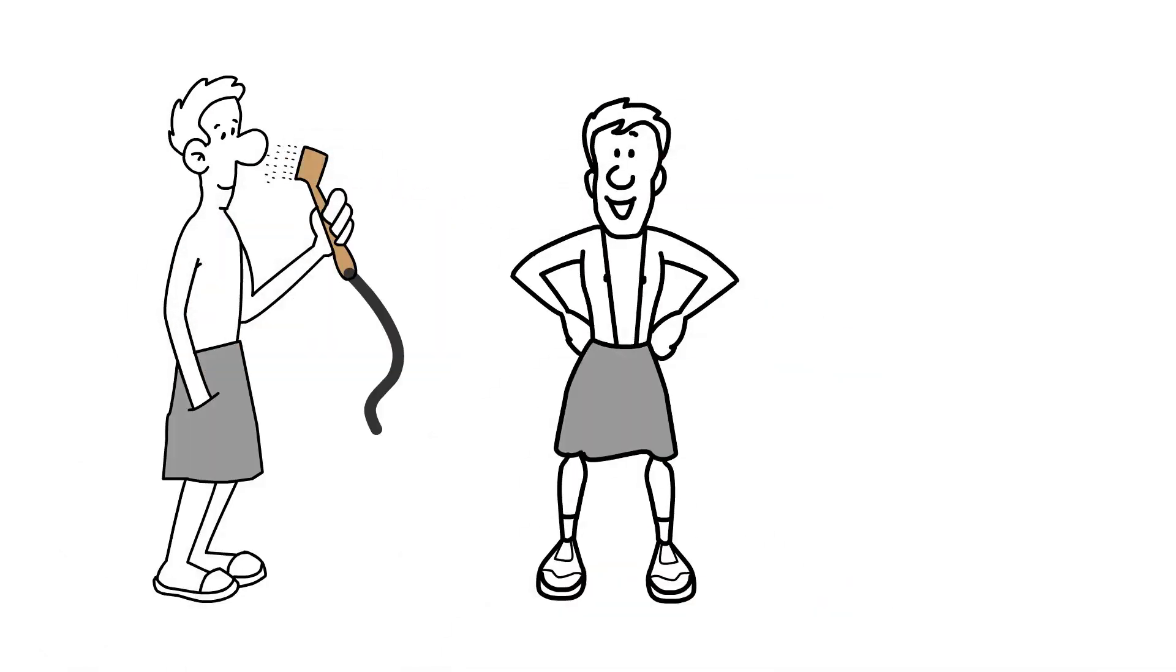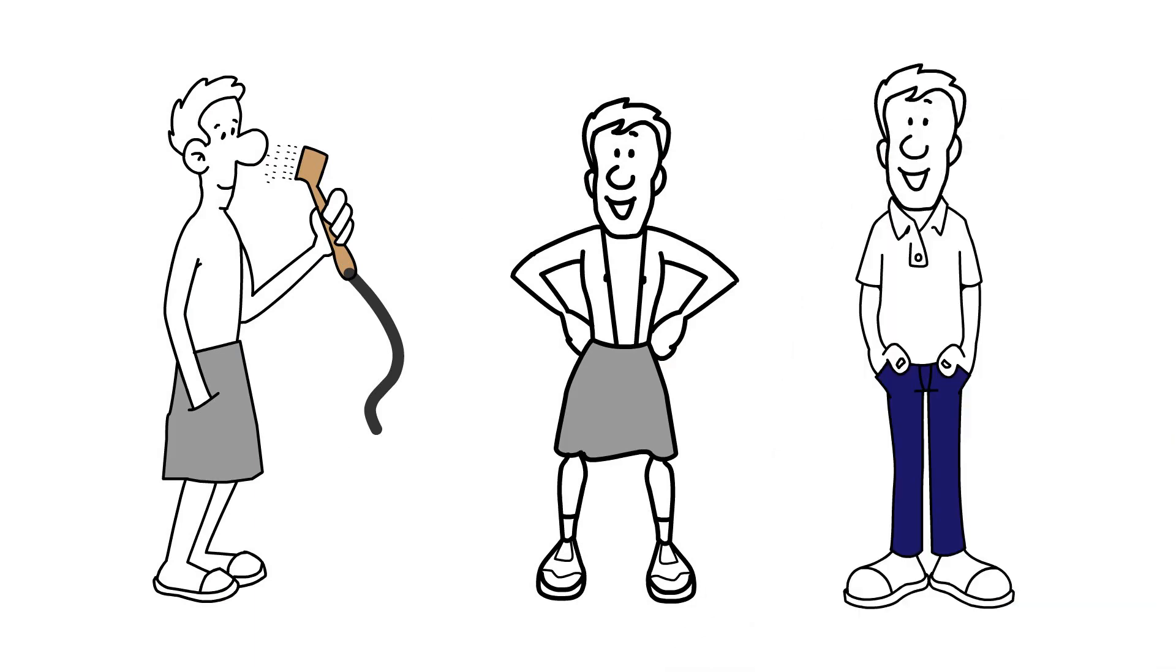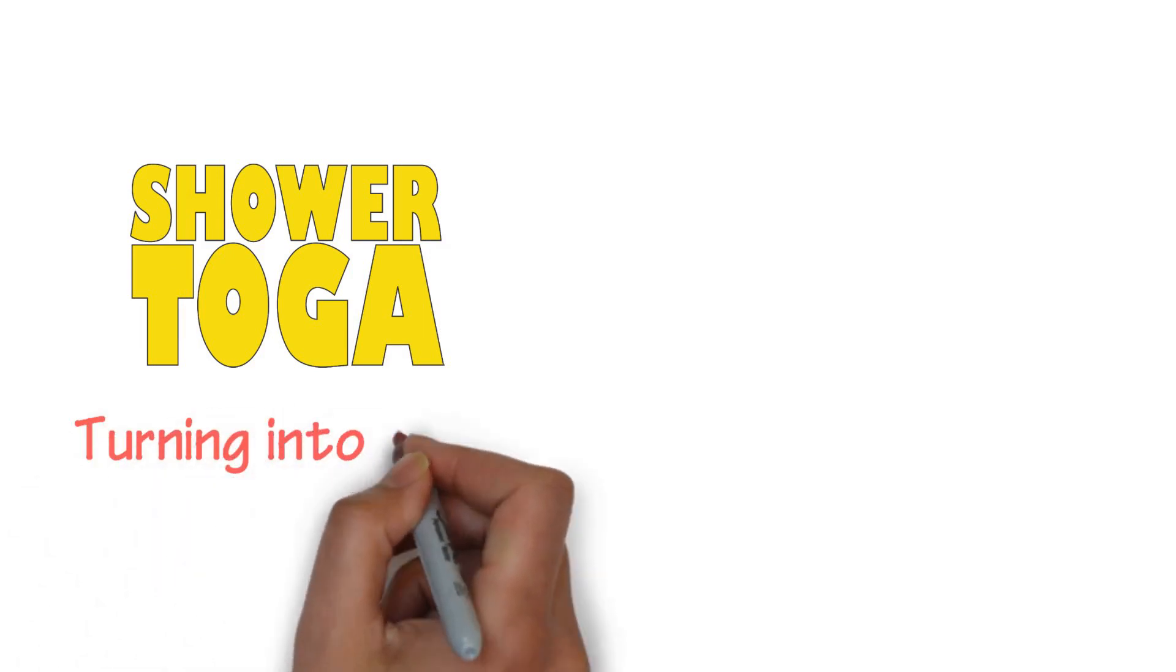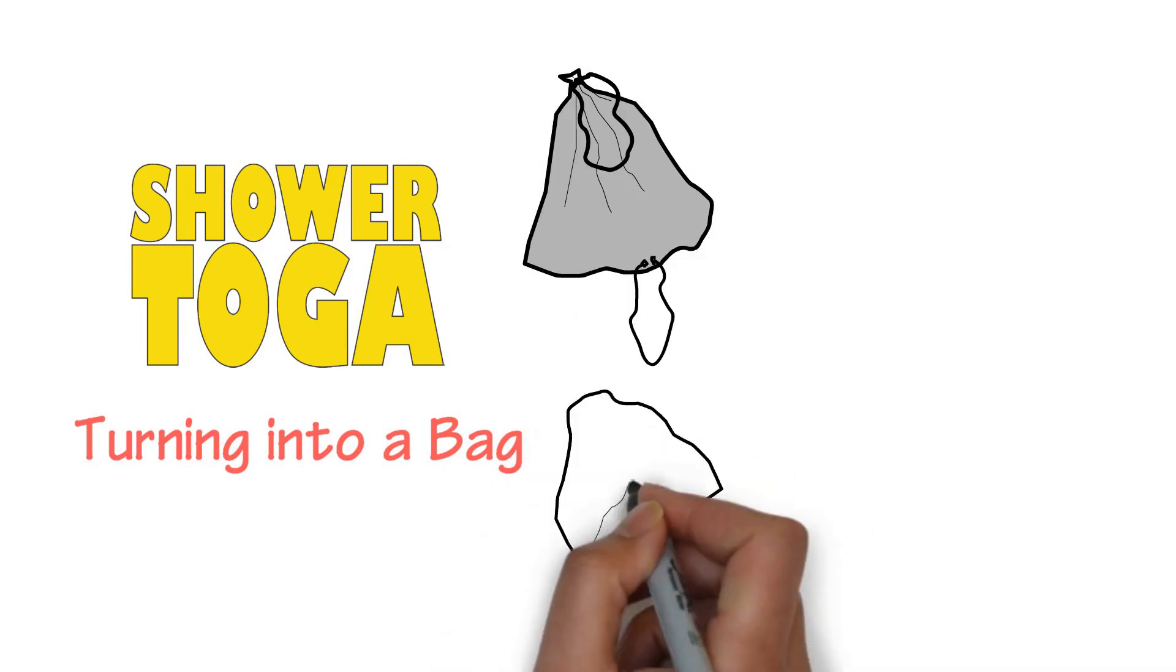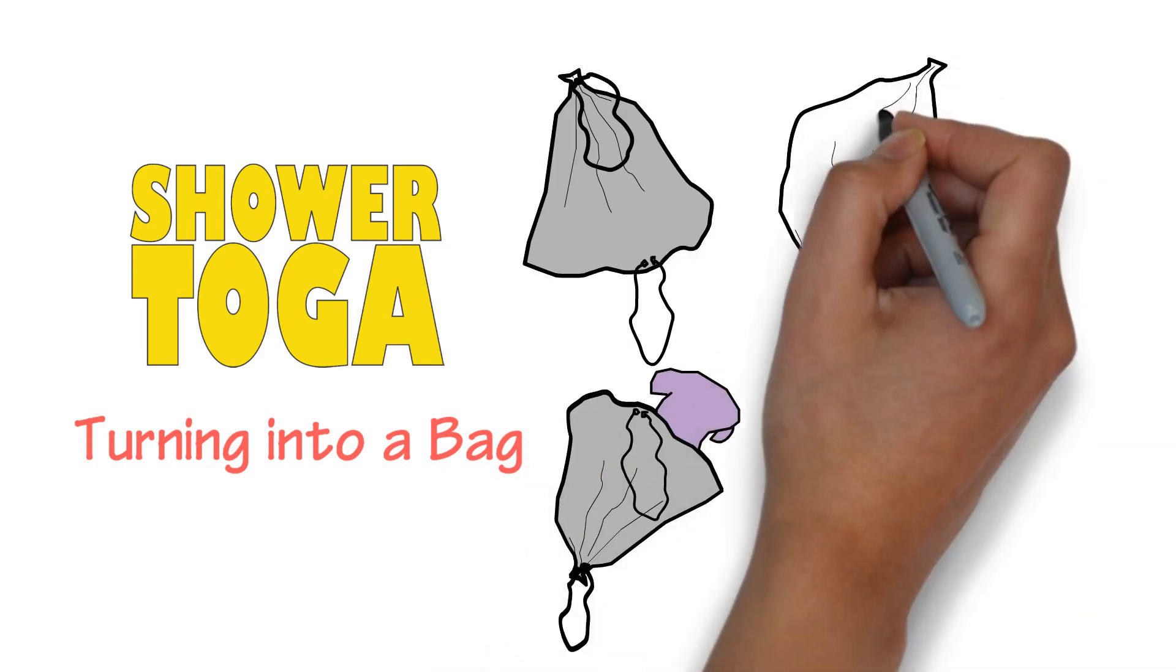Dry off the same way you washed up and put on your clean clothes. The Shower Toga also provides an additional purpose by turning into a bag for your dirty gear. Simply tighten the toggle at the top, turn the Shower Toga over and place dirty items inside and tighten the toggle on the opposite end.